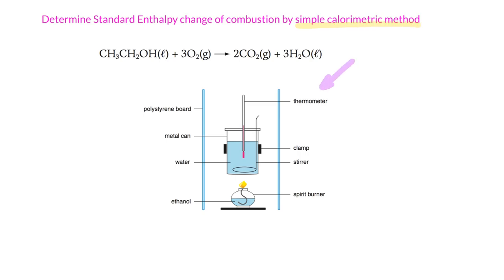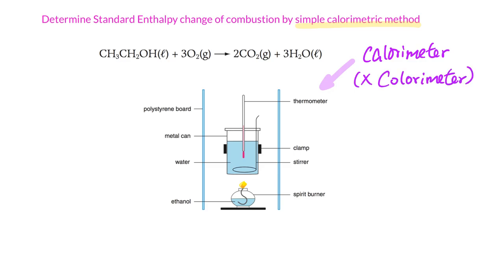So the setup here, we call this one a calorimeter. Pay attention to the spelling — this one is not 'colorimeter'. For colorimeter, you can see that it is related to color. But calorimeter is related to calorie. So this is how we measure the calories of food. If we replace the ethanol here with food, then actually it is a calorimeter — it calculates the calories of the food.